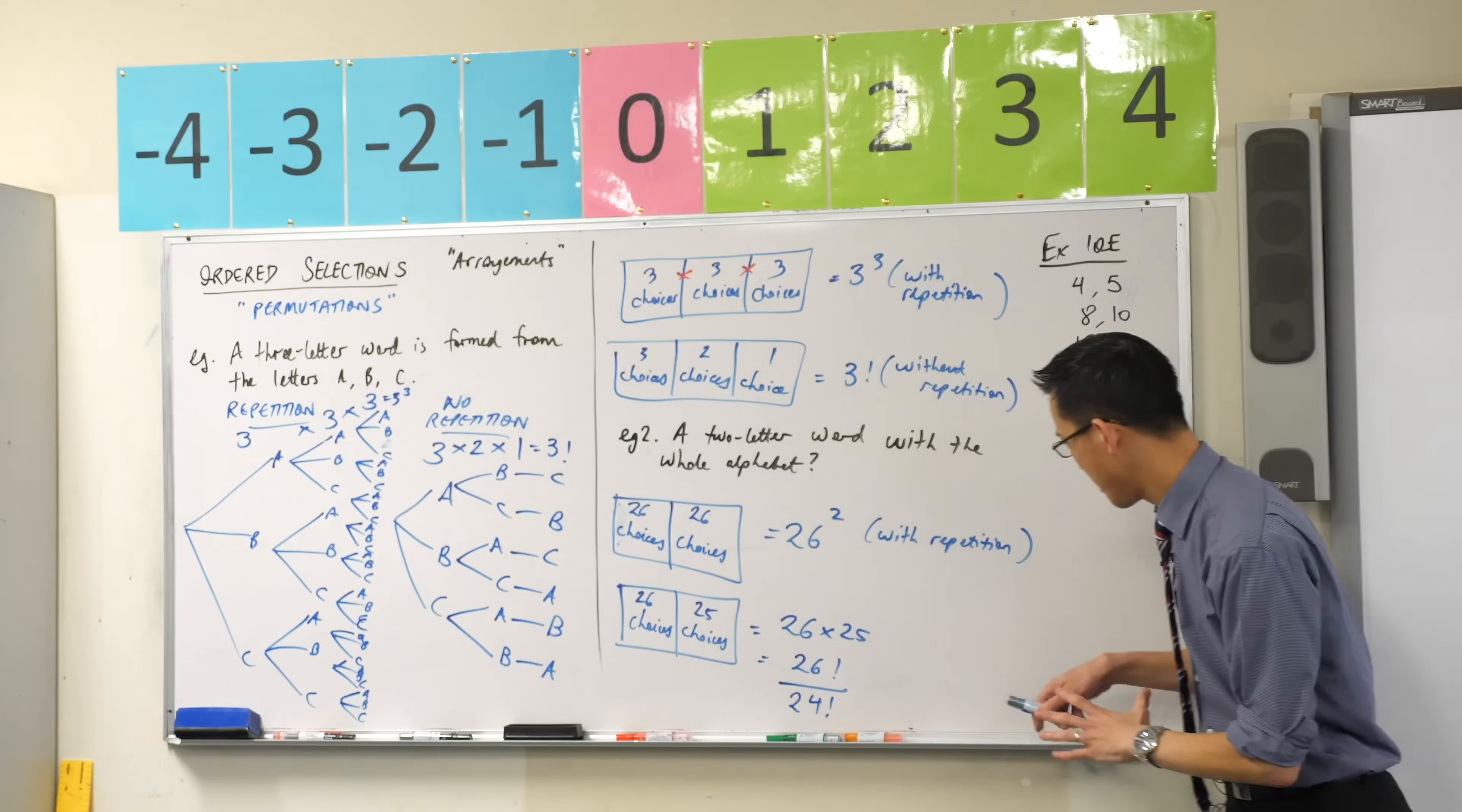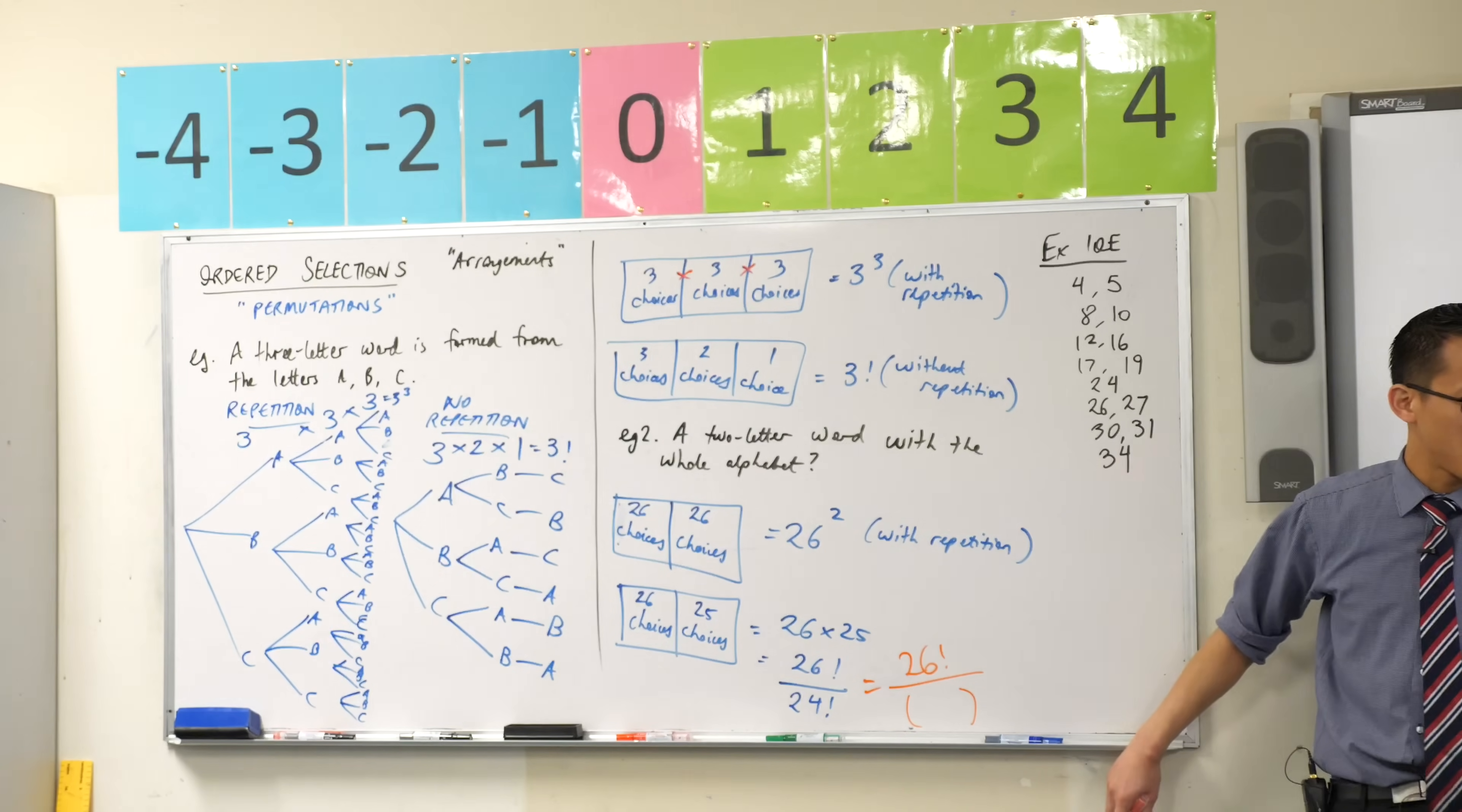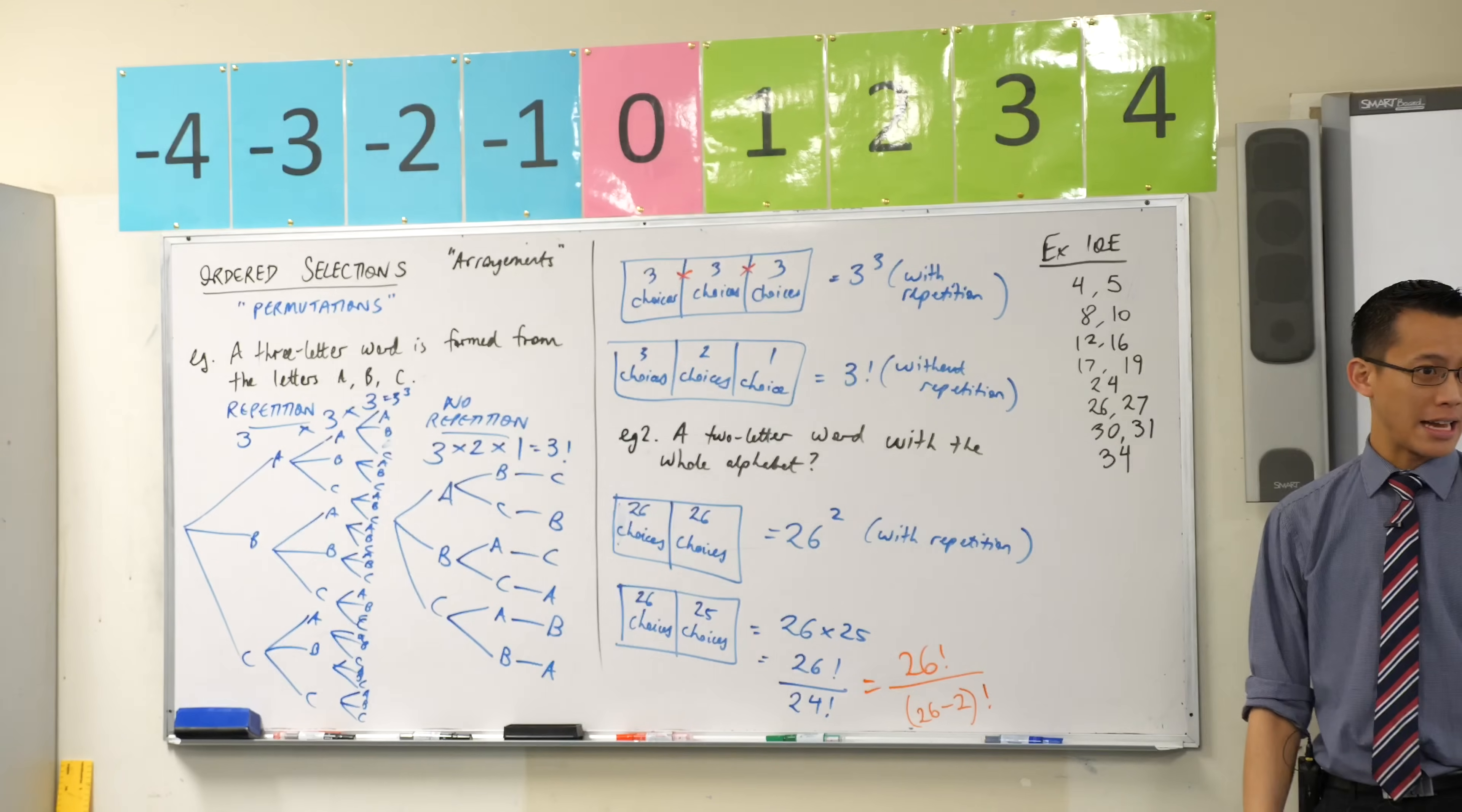One more way that I can state this is to say that this factorial notation down here, it comes from the original number that you started with. How many you have to choose from, bless you. And then this number down the bottom, you take all of those that you had to choose from, but you subtract the number that you are going to select. You're only going to select two of them. That gives me my 24 factorial.